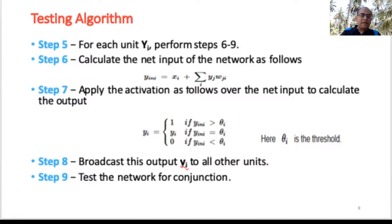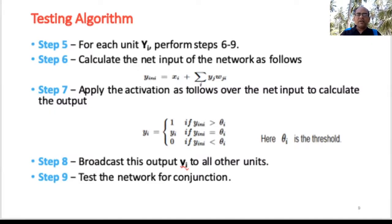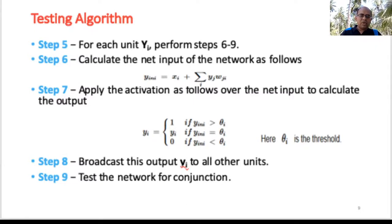For each unit y_i, run a sequence of steps: first, calculate the net input using y_i_net = x_i + Σ_j y_j · w_ji. Then apply the activation function: y_i = 1 if y_i_net > θ; y_i = 0 if y_i_net < θ; and y_i remains unchanged if y_i_net = θ, where θ is the threshold.